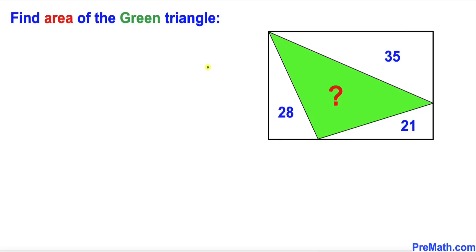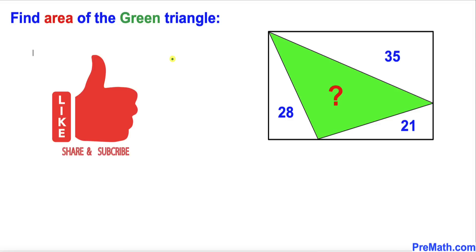Welcome to Pre-Math. In this video we have been given a rectangle that consists of three right triangles along with a green triangle, such that the areas of these right triangles are 28, 35, and 21 respectively. We are going to calculate the area of this green triangle. Please don't forget to give a thumbs up and subscribe.